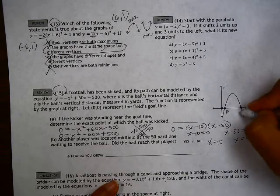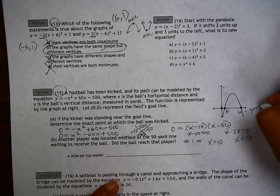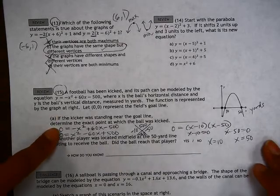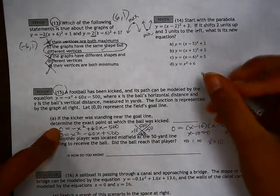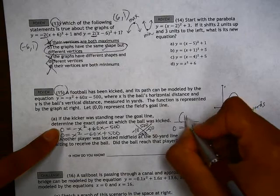So I know this is at 10, this is at 50, and we're in yards. So the question, at what point was the ball kicked? So this would be the point (10, 0).